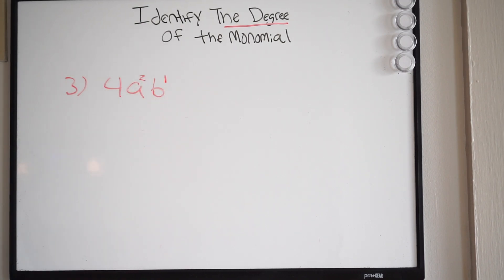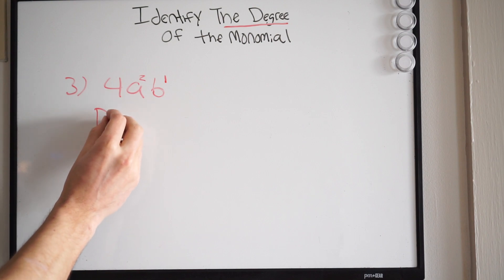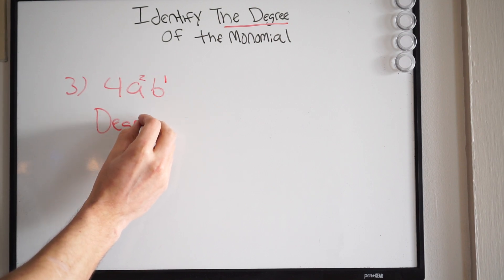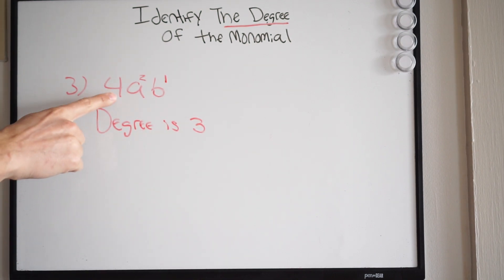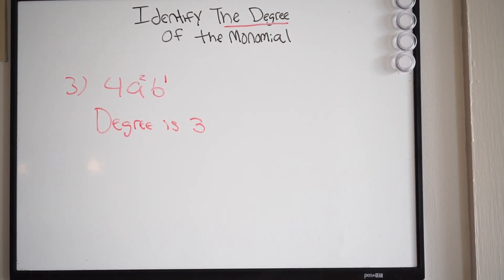Well, it's very simple. You're just going to add, right, the exponents on those variables. So 2 plus 1. So the degree here is 3. Alright, so this has a degree of 3. And again, this is a monomial. And let's try one more.